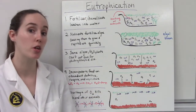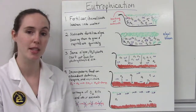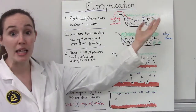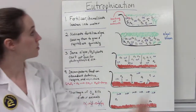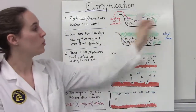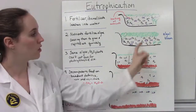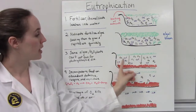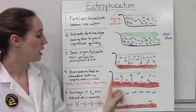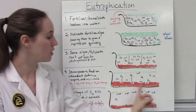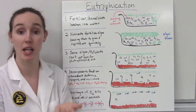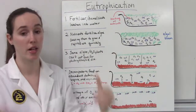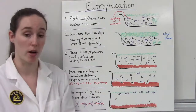First let me show you what the parts of the diagram represent. This is a pond, lake, stream, or even the ocean. The green represents algae. These are purple fish. The black represents oxygen molecules, and this layer of brown material is the dead and decaying material that comes from the death of the aquatic organisms.